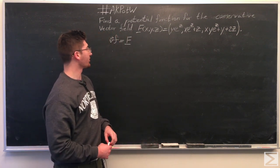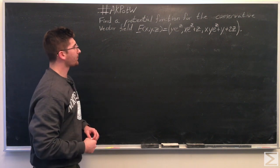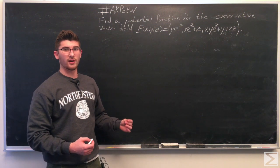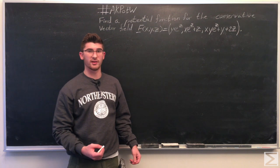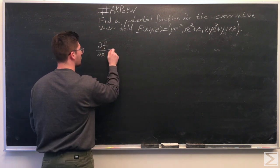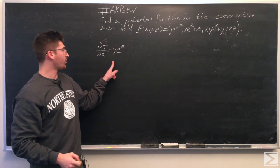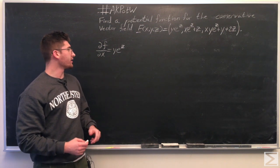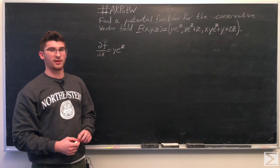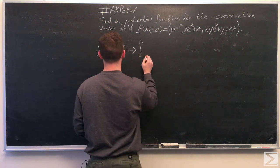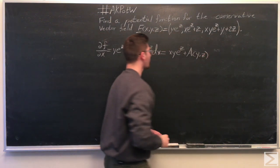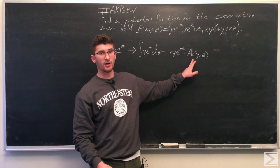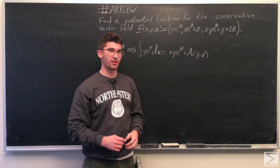So that's what we're going to use to find our potential function. First, we know that y times e to the z is equal to the partial derivative of the potential function f with respect to x. So if we take the partial integral with respect to x of y·e^z, we get x times y times e to the z, plus some arbitrary function dependent only on y and z — no x's in that term.